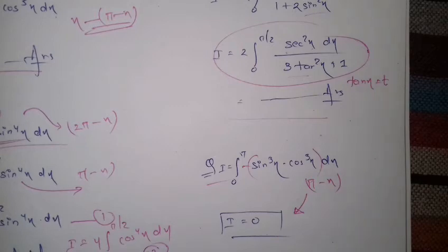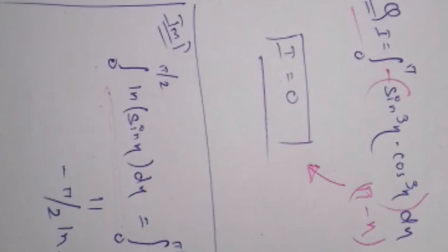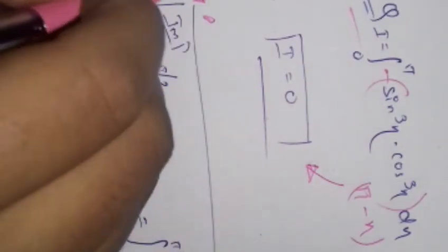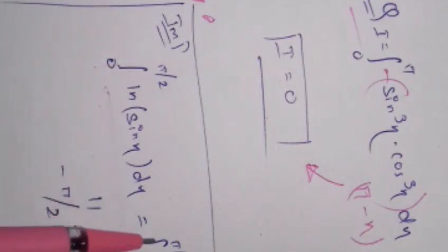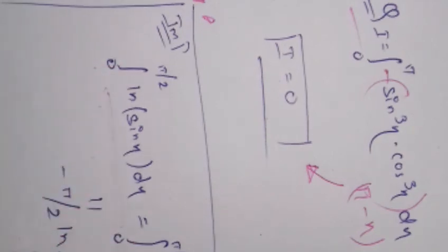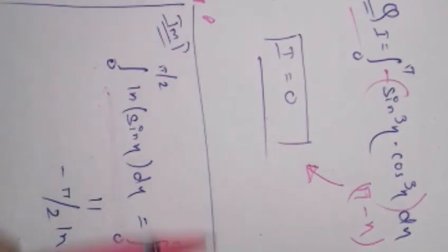There is an important standard result you will use in both regular and combined examples. It states: ∫₀^(π/2) ln(sin x) dx = ∫₀^(π/2) ln(cos x) dx = -π/2 · ln 2. I will make a separate video on this standard result and solve more problems using it.